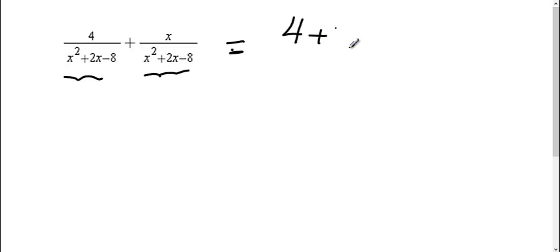So on the top, I'm just going to combine it to 4 plus x. On the bottom, my common denominator is x squared plus 2x minus 8. Now I'm not done because I can still factor this bottom.